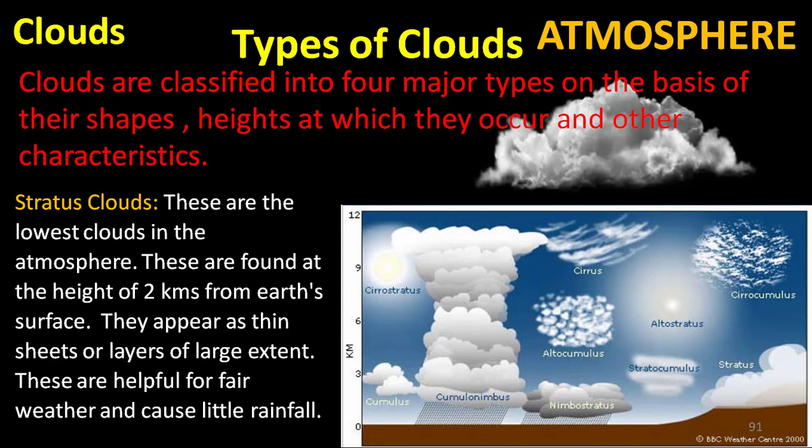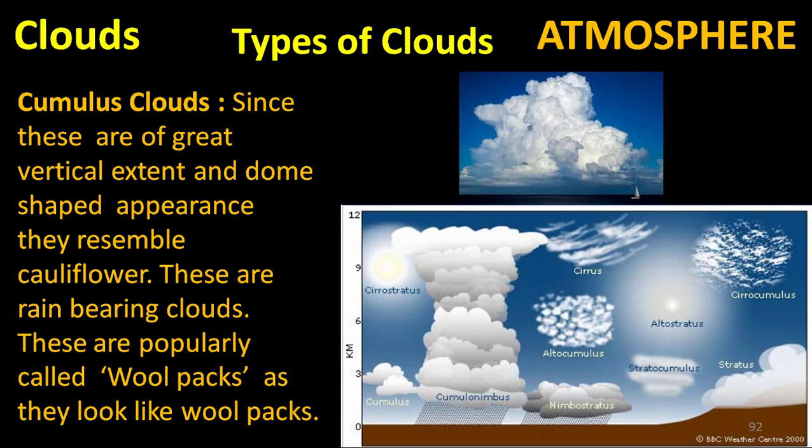Clouds are classified into four major types on the basis of their shapes, heights at which they occur, and other characteristics. They are: stratus, cumulus, cirrus, and nimbus clouds. Stratus clouds are the lowest clouds in the atmosphere, found at a height of two kilometers from the earth's surface. They appear as thin sheets or layers of large extent and are associated with fair weather, causing little rainfall.